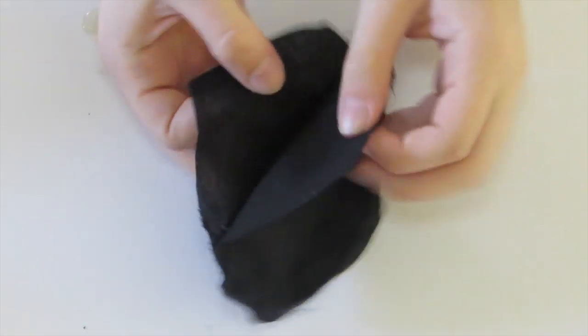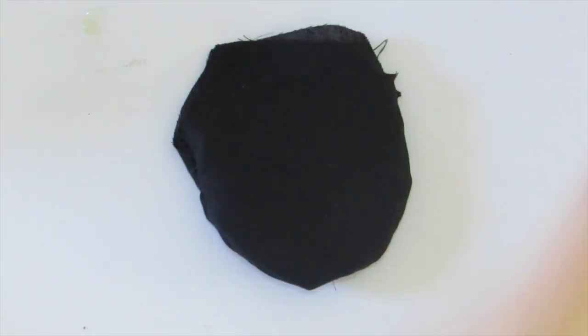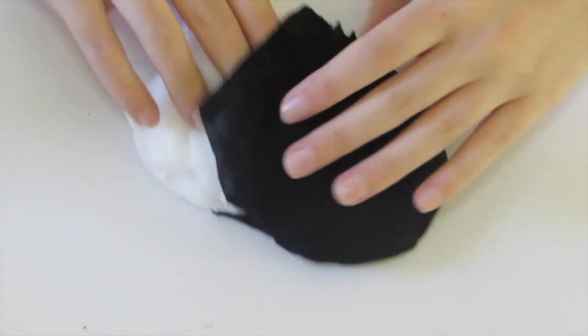Next flip this inside out so that you create a pouch with the seam on the inside. Take your circle with the cotton attached and put it on the inside of the pouch.